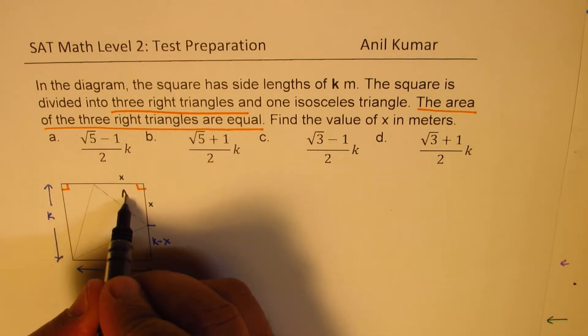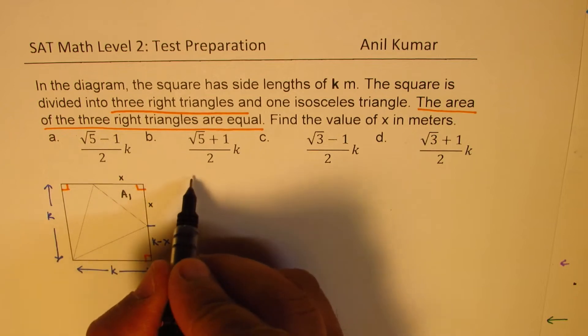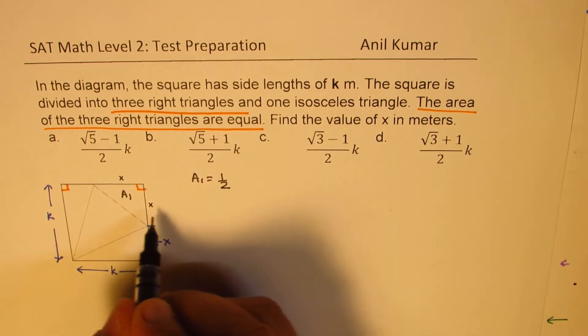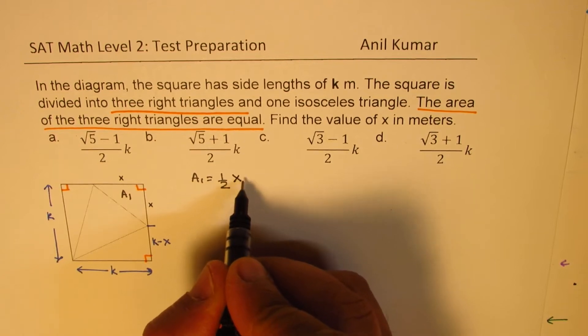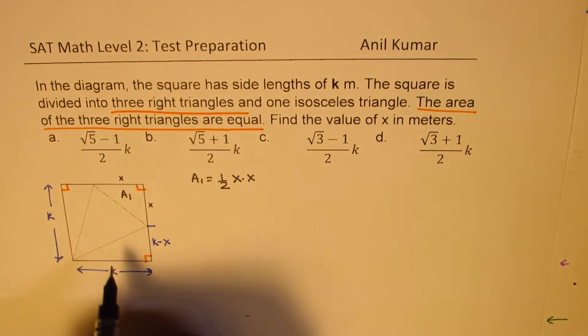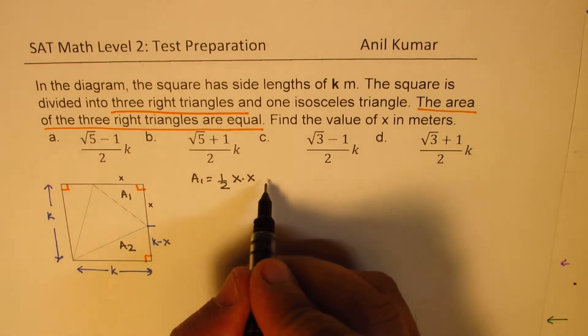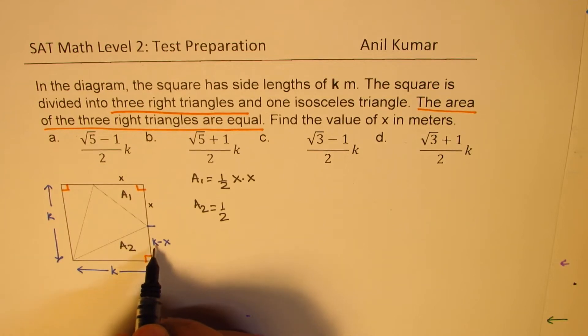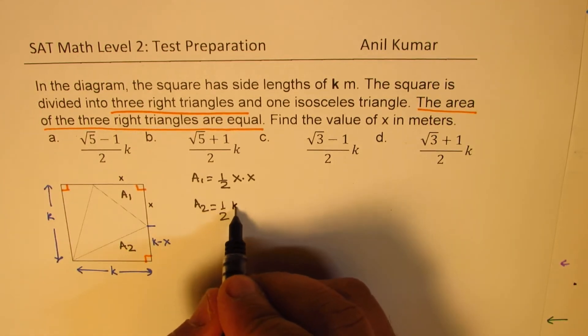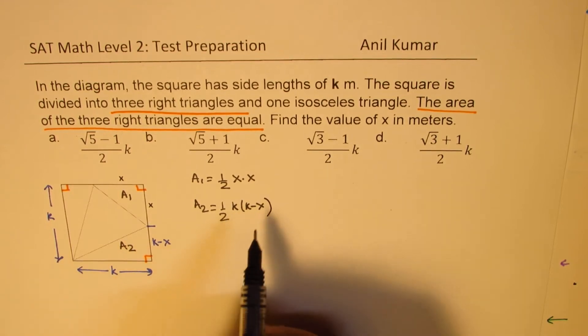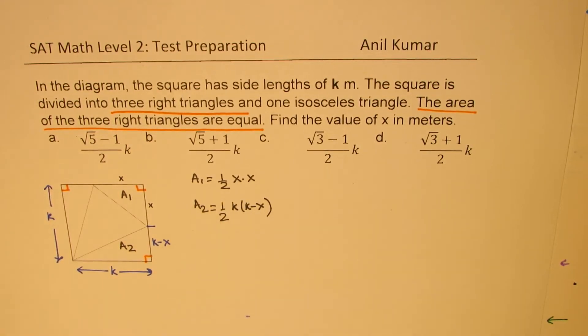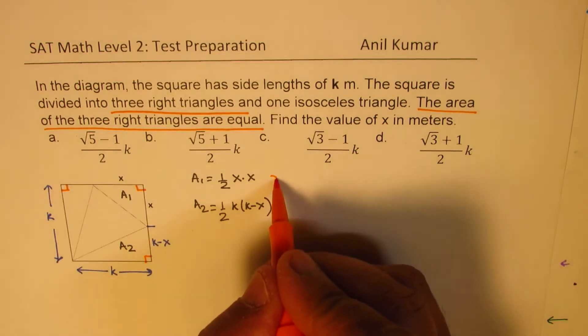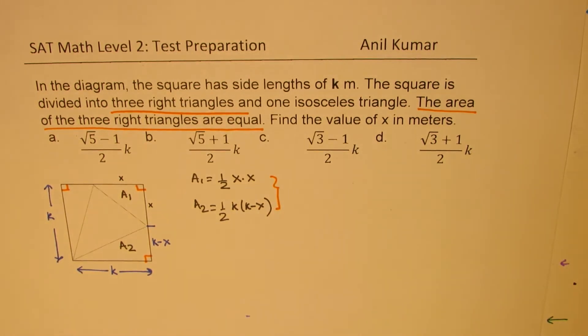Let's start with this particular triangle. Let me call this as A1. So area of A1 will be half base into height. Both are x, right? So x times x. Now let's look into A2. Area of A2 is basically half of k times k minus x. Now we know these two areas are equal and we need to find the value of x in terms of k. So we can equate these two and then solve for x. That's the whole idea.